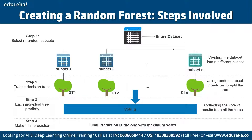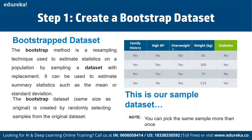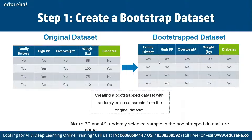The steps are: first, create the bootstrap dataset using resampling with replacement — this estimates population statistics such as mean or standard deviation. Then the bootstrap dataset is created by randomly selecting samples from the original dataset. For example, using features like family history, high BP, overweight, total weight, and the possibility of having diabetes as yes or no, we apply bootstrapping as an estimation method to resample the data.